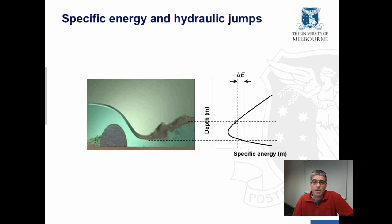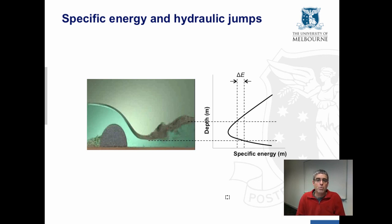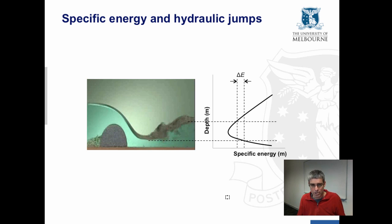This is the depth after the hydraulic jump. The specific energy curve applies to the hydraulic jump, but we can't actually use this curve alone to estimate what depth we might expect downstream of the hydraulic jump for a given depth upstream, because we don't know how much energy is lost in the hydraulic jump — we don't have an equation for that.